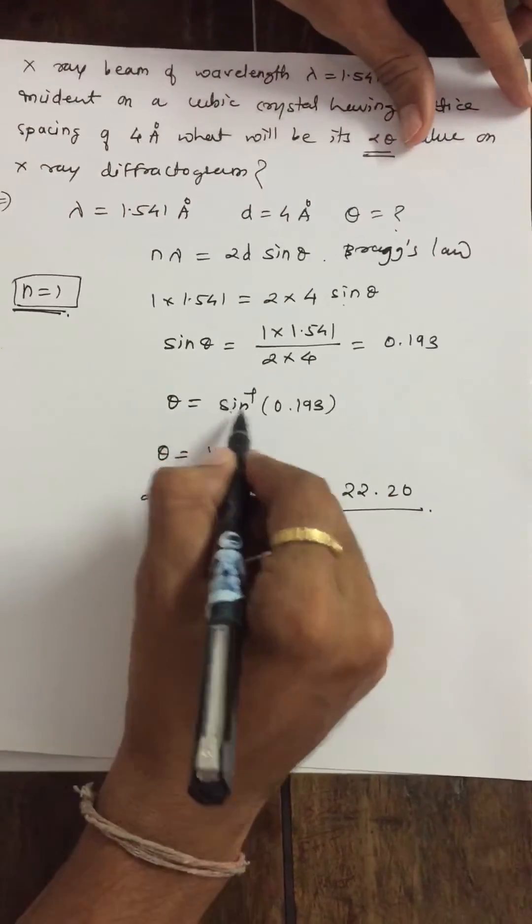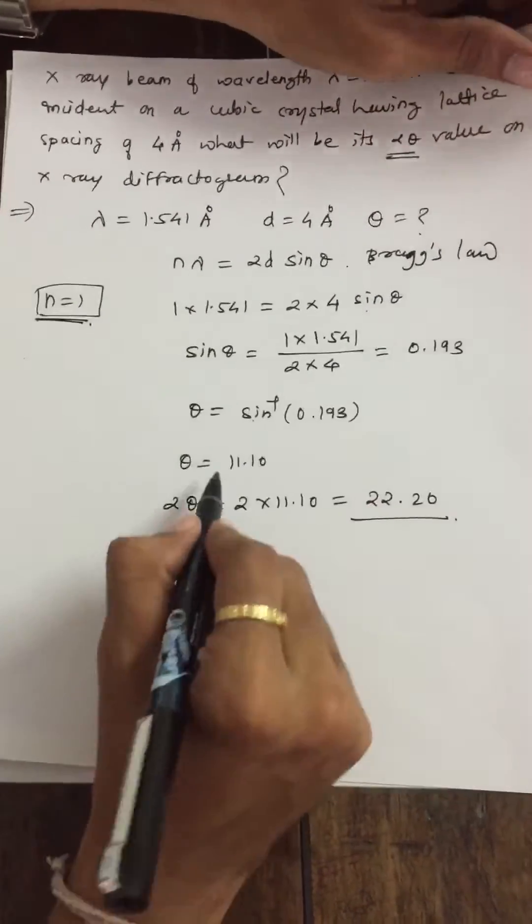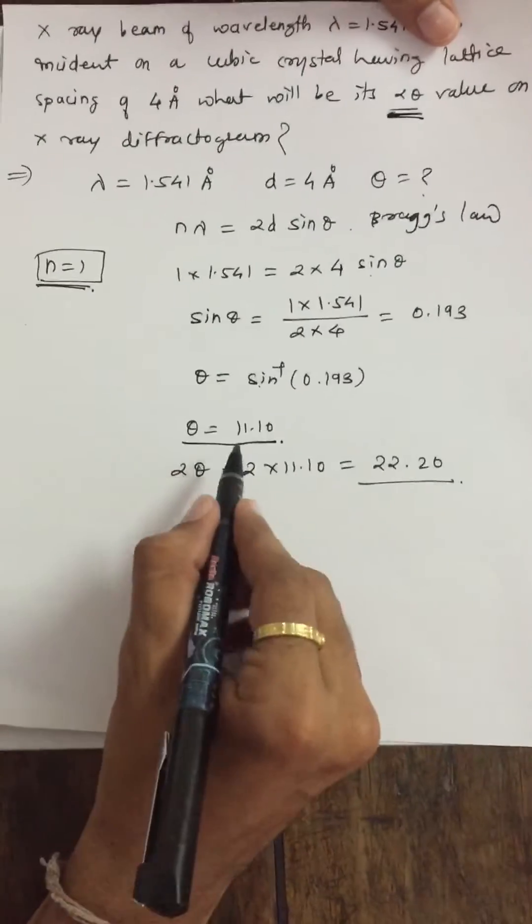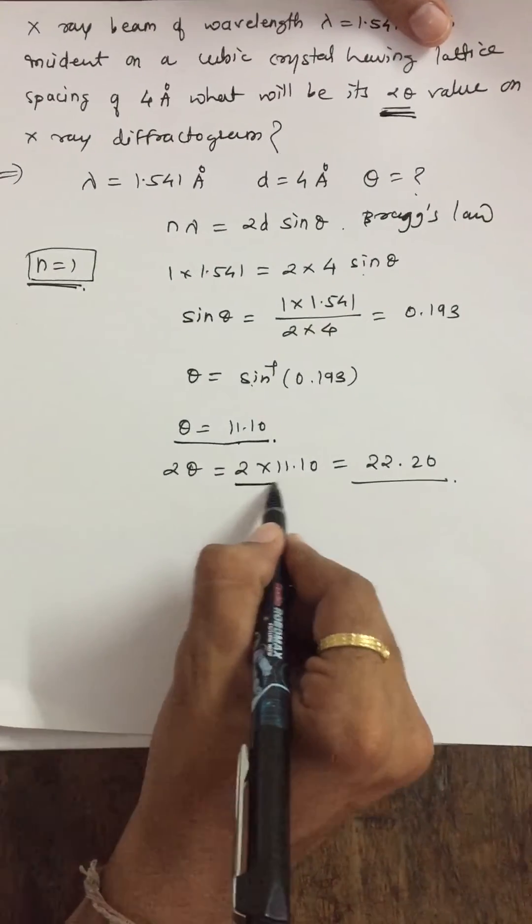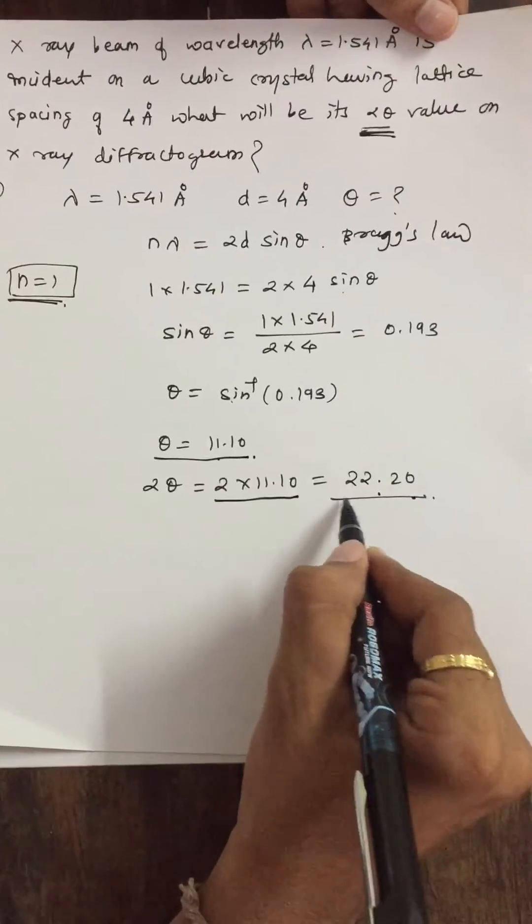So, it would become theta equals sin inverse of 0.193. Calculate by using calculator we get theta equals 11.10. But we have to calculate 2 theta value. So, multiply by 2 we get 22.20. This is the final value.